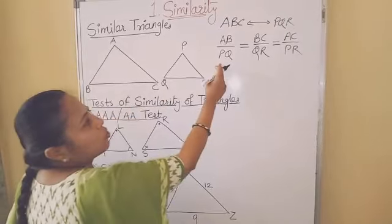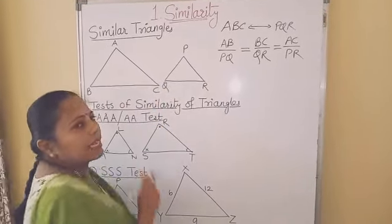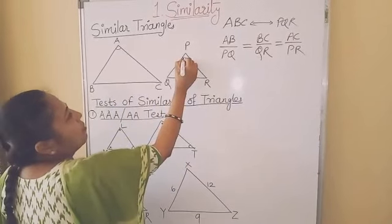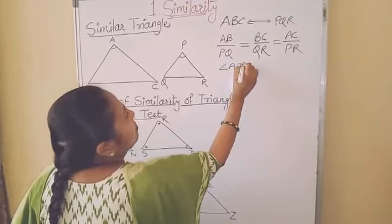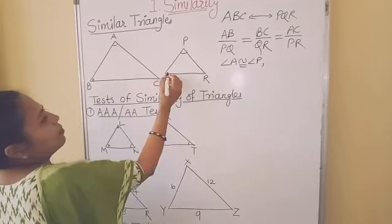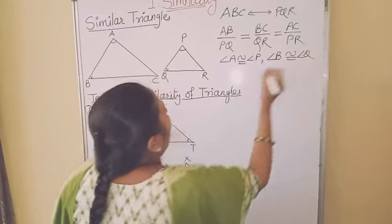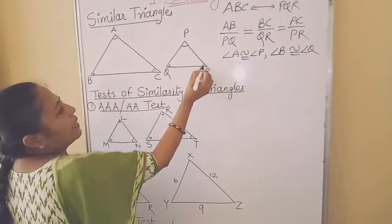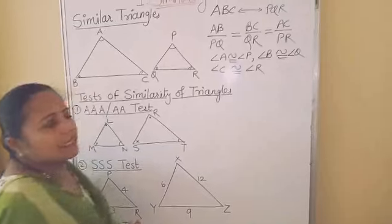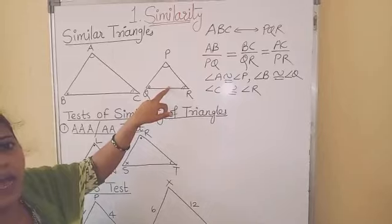When we have the ratio of corresponding sides equal, we can say that the corresponding sides of these two triangles are in proportion. And angle A is congruent to angle P, angle B is congruent to angle Q, and angle C is congruent to angle R — corresponding angles are congruent. Then we can say that these two triangles are similar.